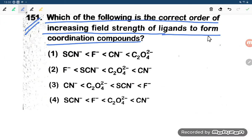This question is based on the spectrochemical series. If you talk about the spectrochemical series, the highest strength is CN⁻, then oxalate ion, then fluoride, and then thiocyanide.